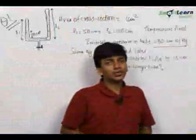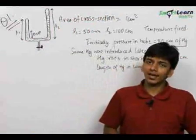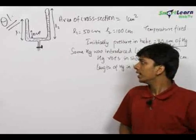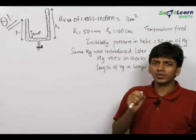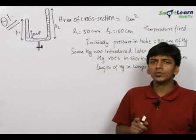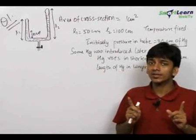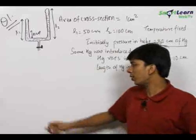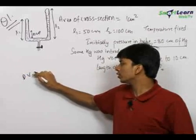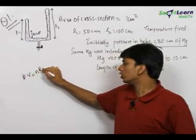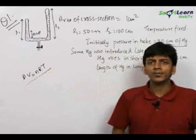The next chapter we deal with in physics is kinetic theory of gases and gas laws. This is a pretty simple chapter — you just need to remember certain basics. Remember all the assumptions of kinetic theory of gases and a simple formula PV equals NRT, and you can solve almost all the questions using this formula.